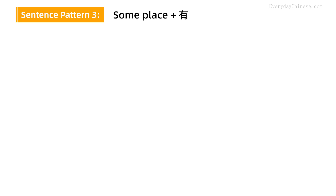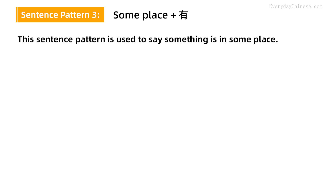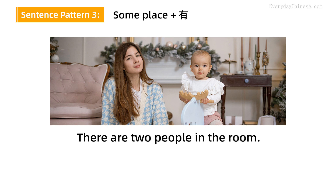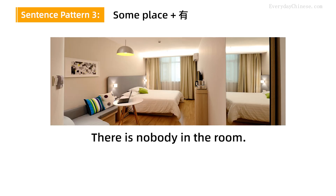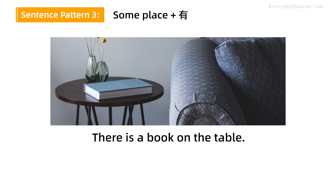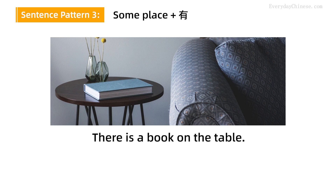Sentence pattern 3: Someplace有. This sentence pattern is used to say something is in some place. For example: There are two people in the room — 房间里有两个人. There is nobody in the room — 房间里没有人. There is a book on the table — 桌子上有一本书.